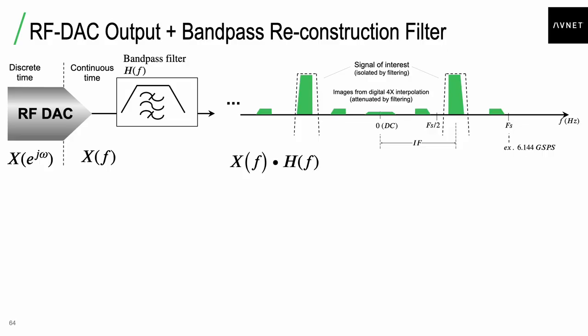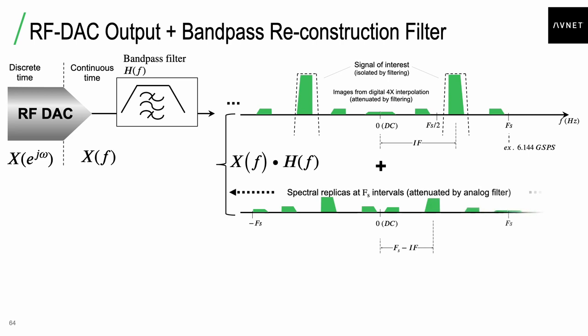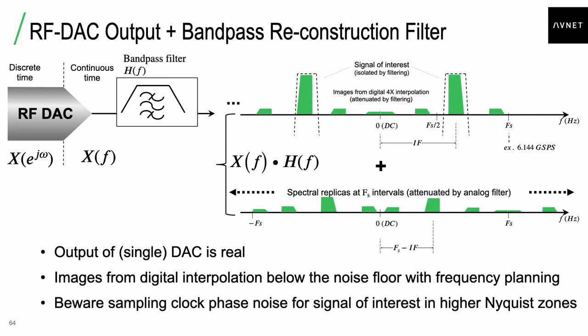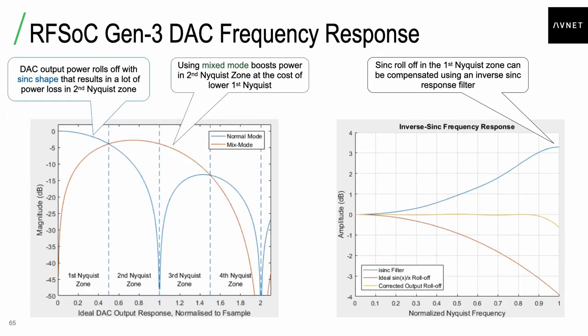At the output, you must consider the effects of a reconstruction filter. Spectral images are replicated at multiples of the sampling rate — an inherent physical reality of a DAC — and those images can be attenuated by an analog filter. There's a trade-off: a higher sampling rate spreads spectral images further out so the filter roll-off can more effectively attenuate them. All of these considerations must be understood to get a good signal from the baseband RFSOC device.